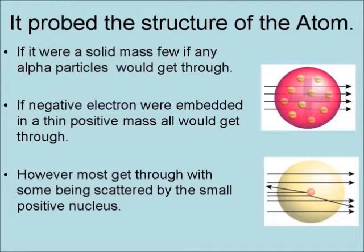However, what they found was that most of the alpha particles get through, with some of them being scattered by the small, positive nucleus.